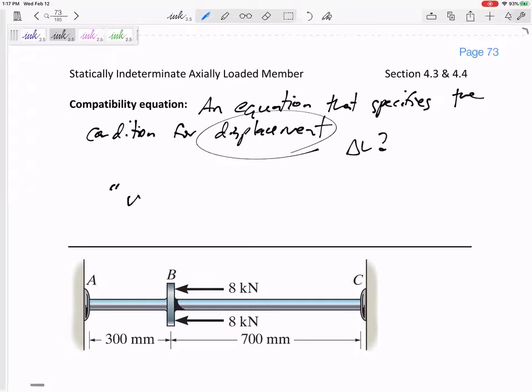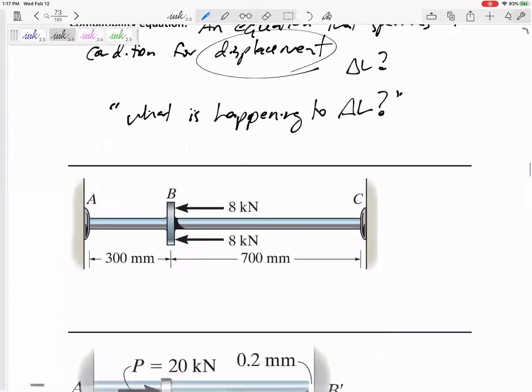What is happening to delta L? A setup like this would be delta L of section AB plus delta L of section BC adds up to zero. Maybe it adds up to zero. Every section might change a little bit, but overall the pluses and minuses would add up to zero, right? The compressions and elongations would add up to zero.